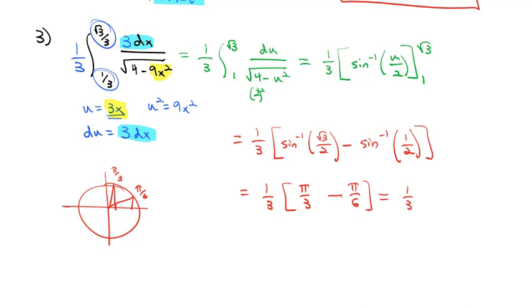So we end up with 1/3 times pi over 3 when we subtract, or pi over 9, is the area under our curve between 1/3 and square root of 3 over 3.